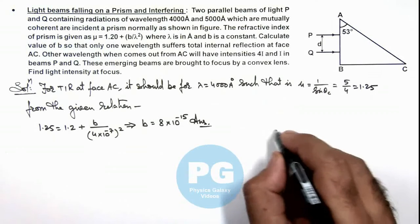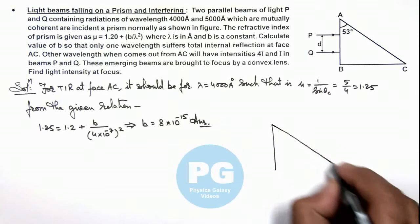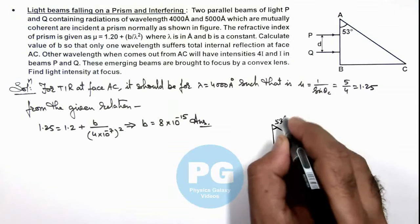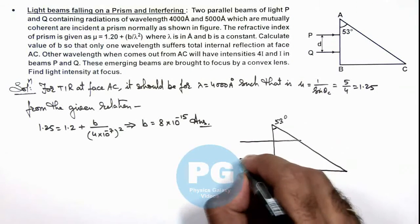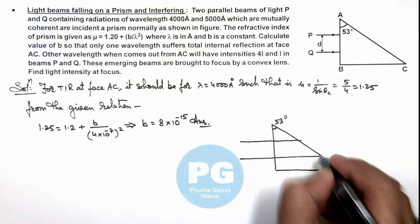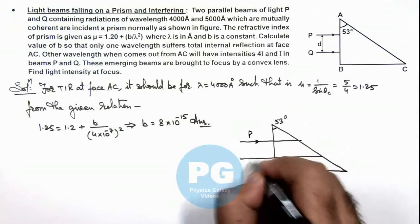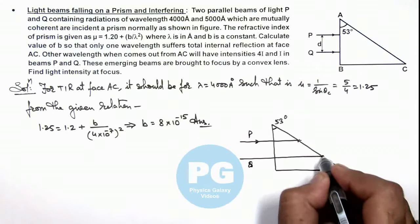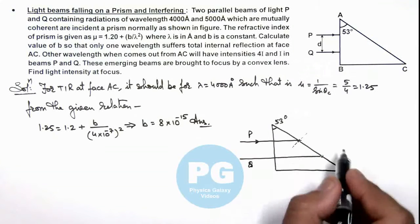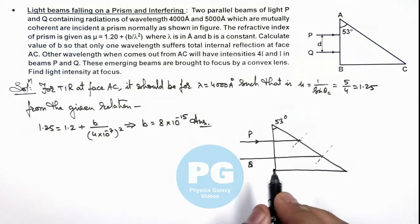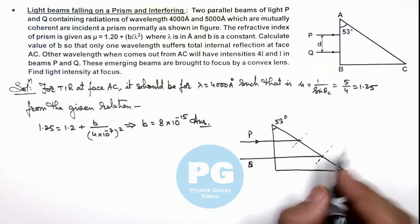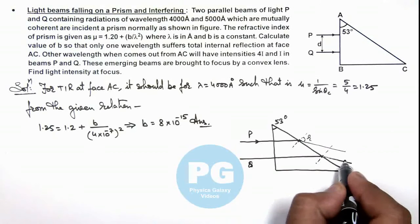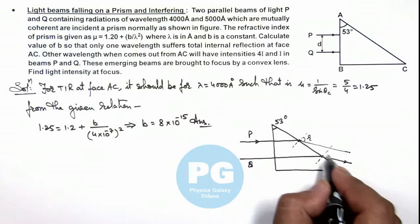And here if we redraw the figure, we can see if this angle is 53 degrees and light beams P and Q are incident over here. Then for the light beams P and Q there will be a path difference which is introduced due to the two light rays which are coming out from the surface AC. Say if this is coming out at some angle r, both of these light rays are going at an angle r from the normal.